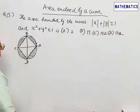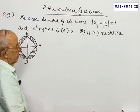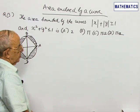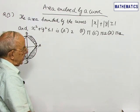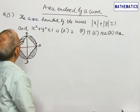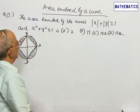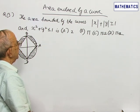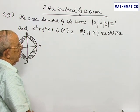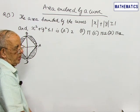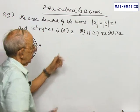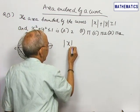Problem number 3: The area bounded by the curves |x| + |y| ≥ 1 and x² + y² ≤ 1 is given by 4 choices.